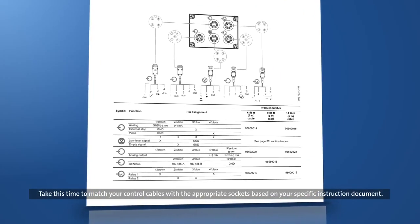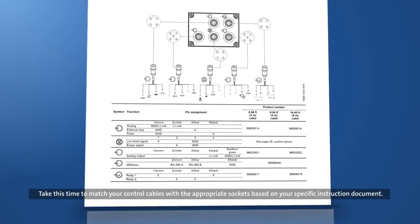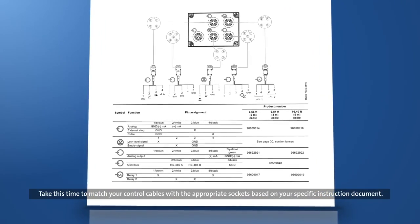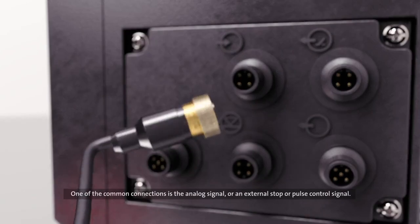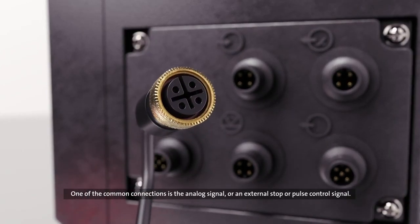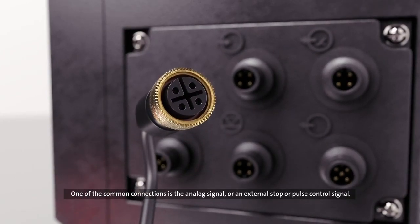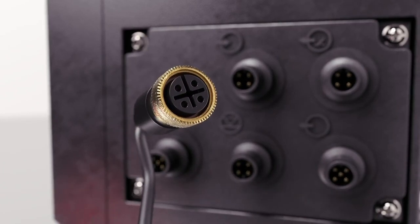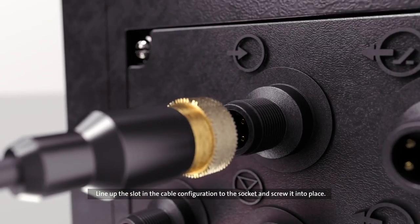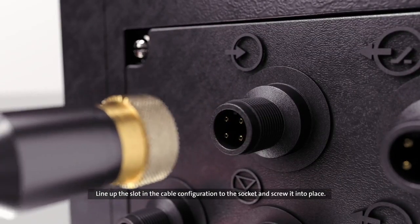Take this time to match your control cables to the appropriate sockets based on your specific instruction document. One of the common connections is the analog signal or an external stop or pulse control signal. Line up the slot in the cable configuration to the socket and screw it into place.